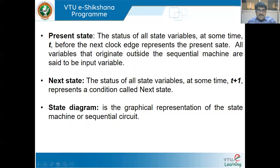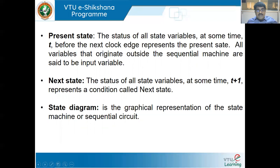Present state: the status of all the state variables at some time t before the next clock edge represents the present state. Next state: the status of all the state variables at time t+1 represents the next state. Before the clock it is t; after the clock it will be t+1 — that is the difference between the next state and the present state.